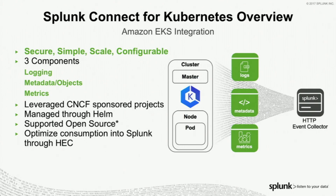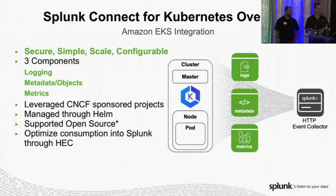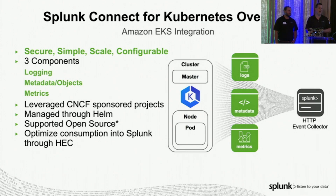With the simple configuration, we managed that through Helm, utilizing the Helm project within CNCF to help deploy and manage it. Simple and secure — we started off with FluentD and added additional configurations to make it much more scalable and reliable. With that configuration, there are three different components: a logging component, a metadata or objects component, and a metrics component. All these different pieces can operate independently as necessary, or you can pick the ones that meet your use case.